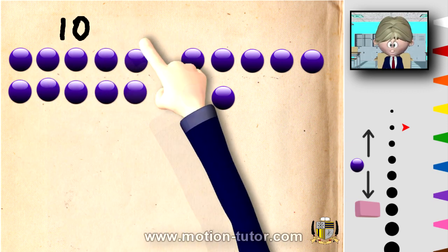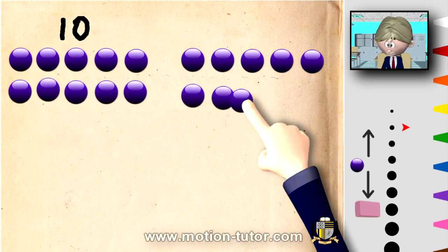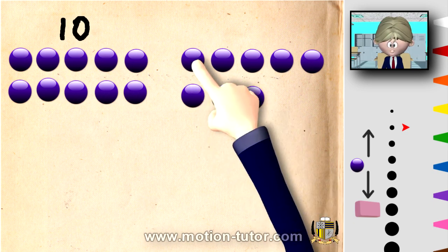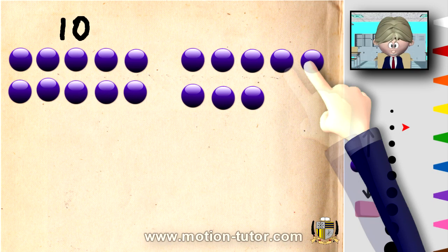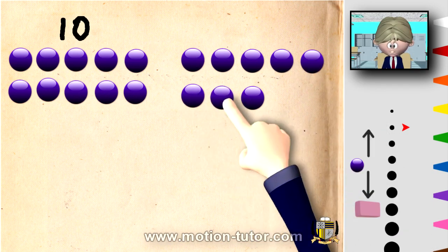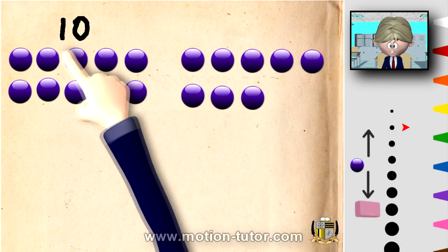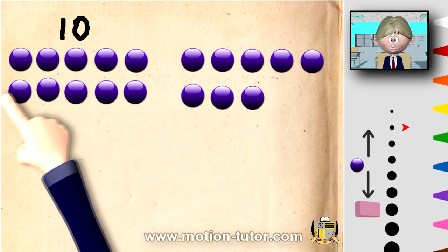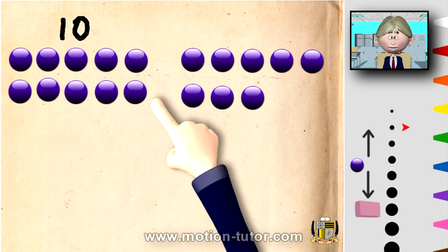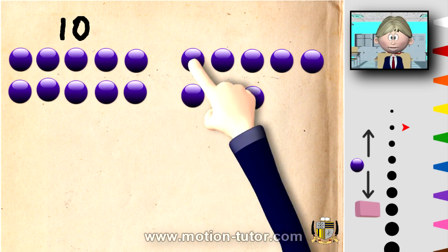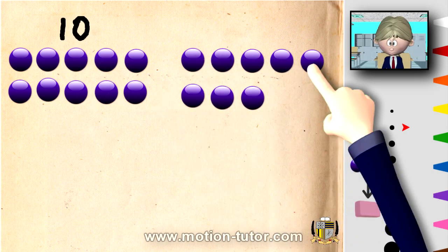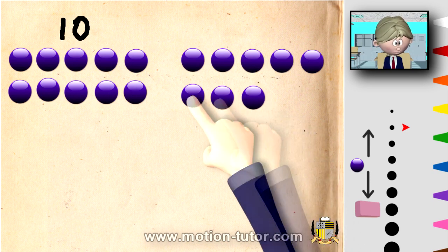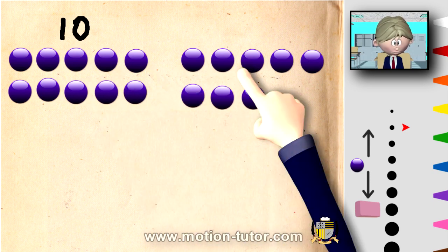Let's go on to another one: 10 and 8 more. 1, 2, 3, 4, 5, 6, 7, 8 — so this is 8 more. Now counting all: 1, 2, 3, 4, 5, 6, 7, 8, 9, 10, 11, 12, 13, 14, 15, 16, 17, 18. So, 10 and 8 more is 18.